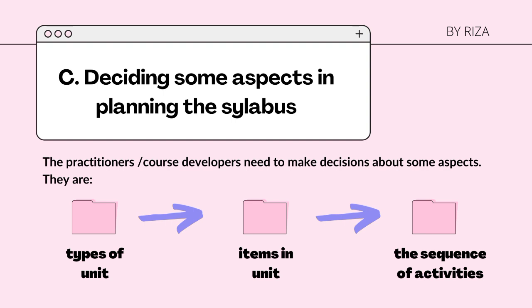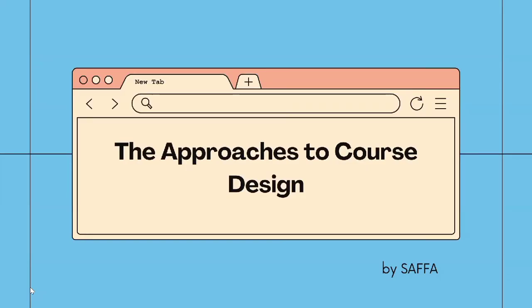These aspects are: first, type of unit, such as skills, vocabulary, genres, functions, notions, and disciplinary, professional, or cultural content. Second, items in the units, such as which genres, semantic sets, and functions must be included. And the last one is the sequence of activities — the practitioners should know what should come first, second, and so forth. Decisions are made according to considerations such as immediate and less immediate need, level of difficulty with easier items before more difficult ones, and logical flow. For instance, in business English, opening meetings before closing meetings.